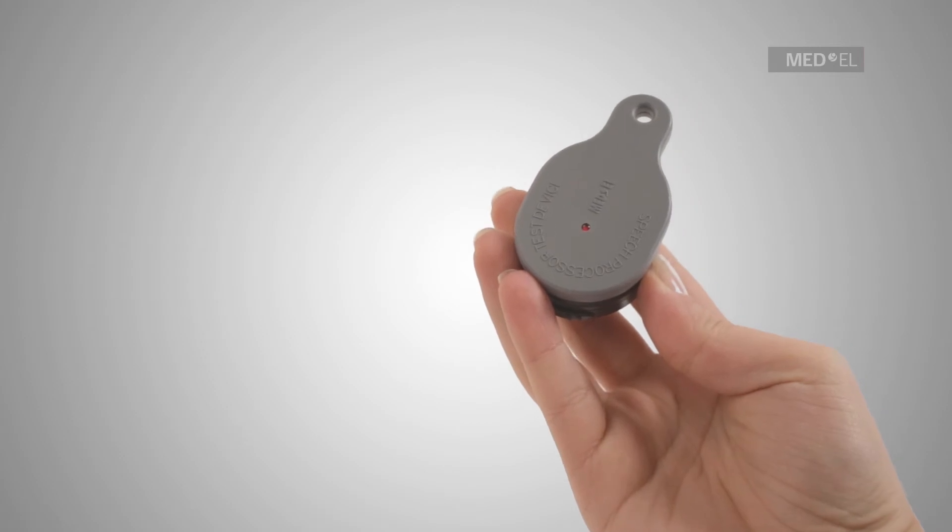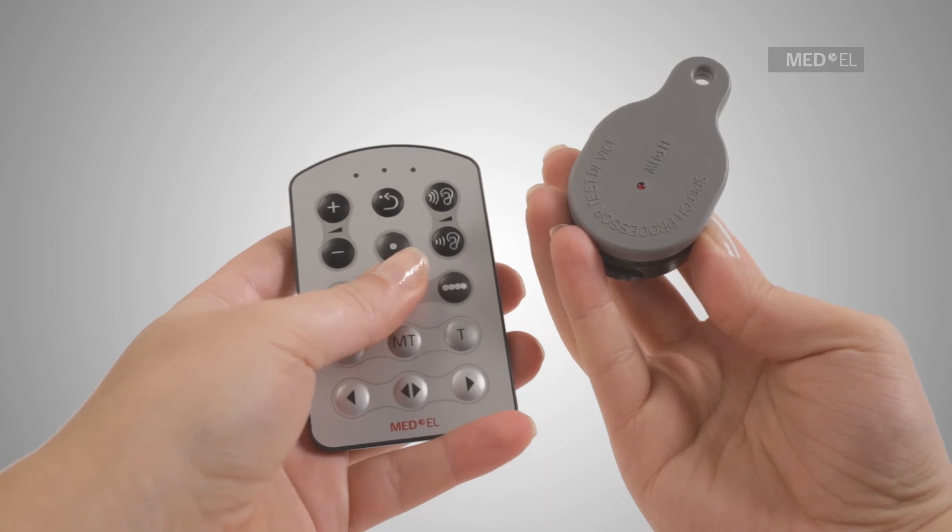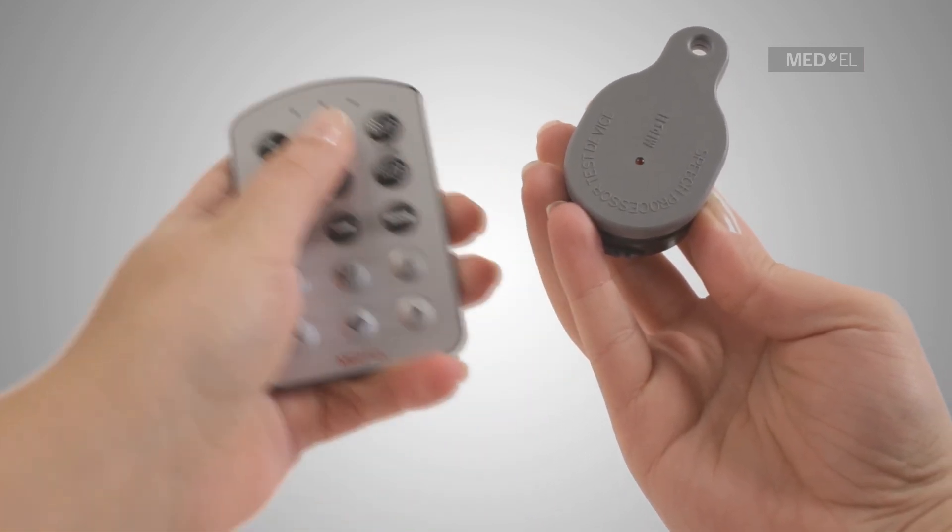If the red light on the Speech Processor Test Device does not flicker or stays on constantly, adjust the volume of the RONDO using the FineTuner Remote Control Unit.